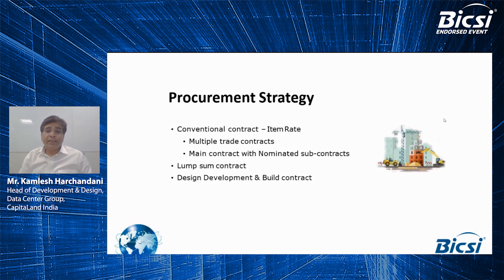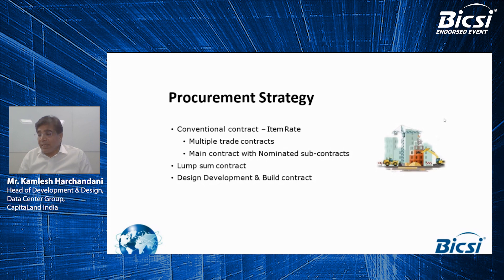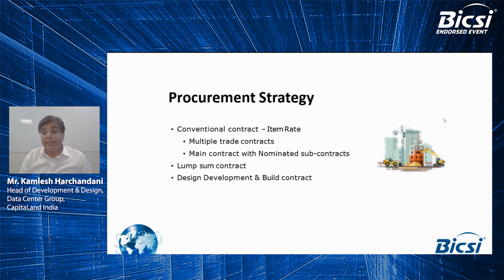Moving on to the next slide, we also follow a procurement strategy. There are three different procurement strategies: first is the conventional contract on an item rate basis; second is a lump sum contract; and third is a design, develop and build contract. In the past, project execution used to take place with separate contracts for core and shell, interior, electrical, HVAC, LV side, and high voltage requirements — which became a tedious task for any organization to manage for seamless integration. It really makes sense to reach out to only one GC for complete project execution, though we still need to see more experienced GCs in the data center segment.